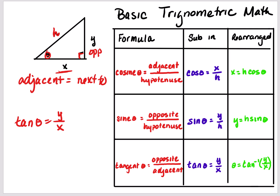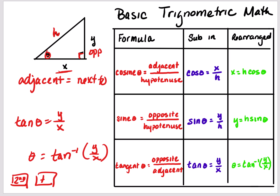To get theta, I need to do the opposite, which is inverse tan. So when I do an inverse tan, theta becomes tangent negative 1 of y over x. On your calculator, inverse tan would be second tan, and you'll punch in y over x — whatever your numbers are.